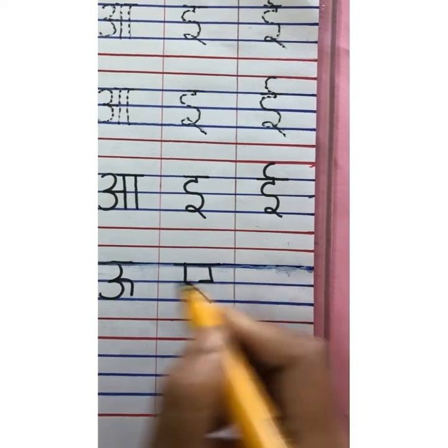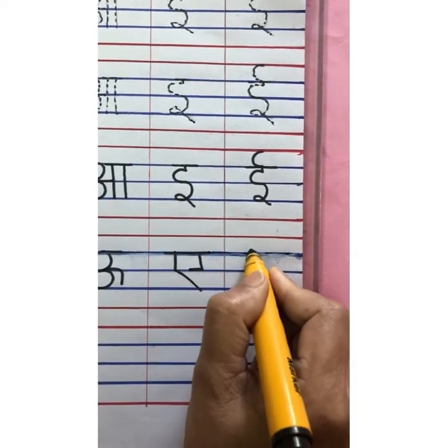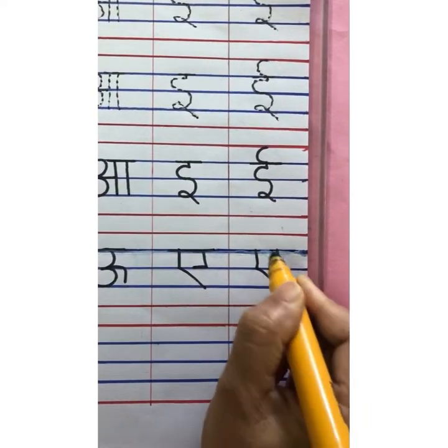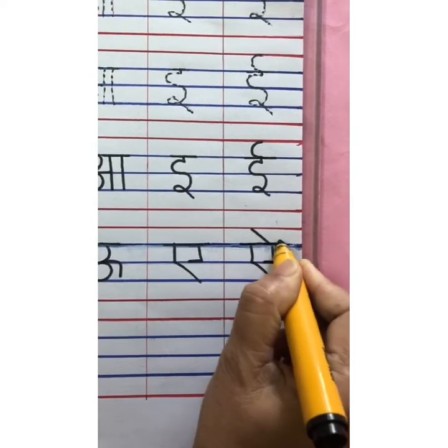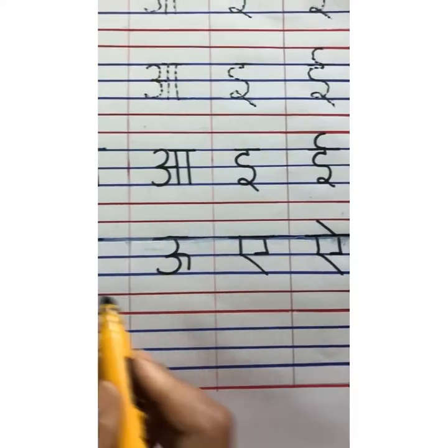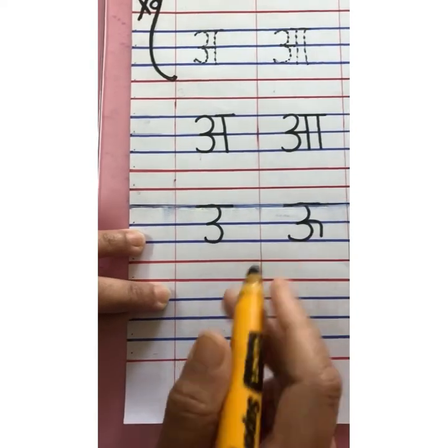After a comes a. So write a. U, U, a, a.